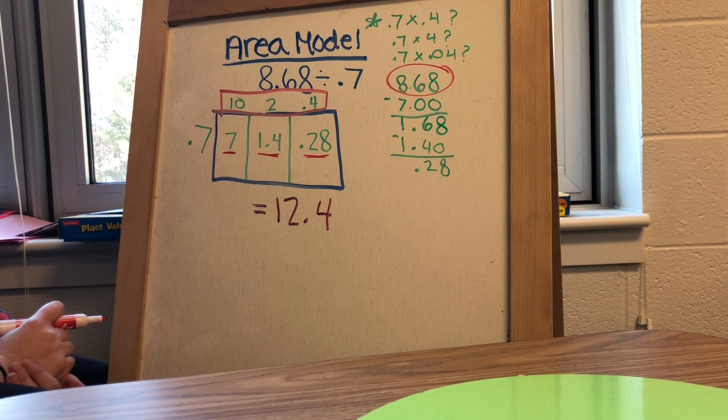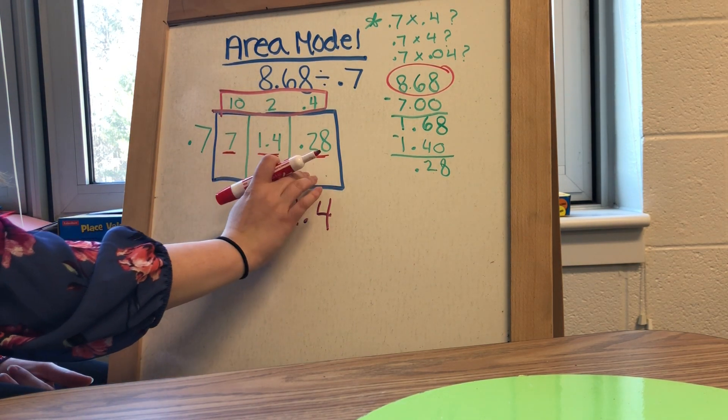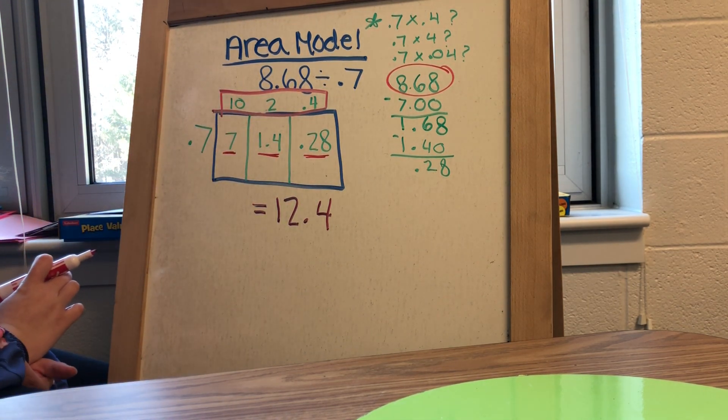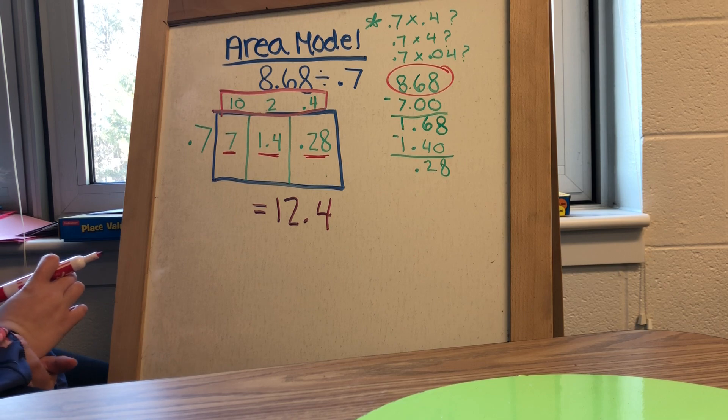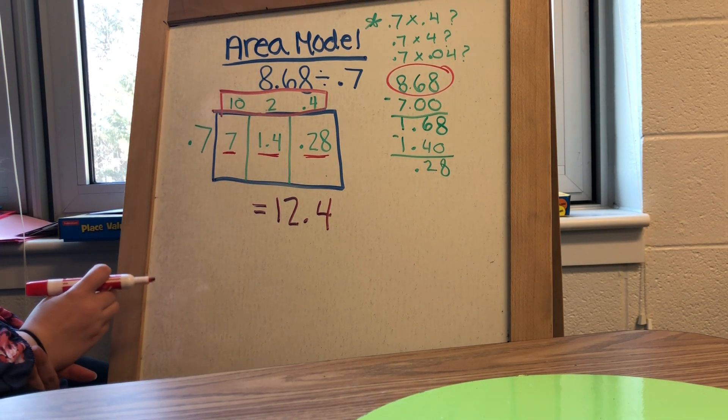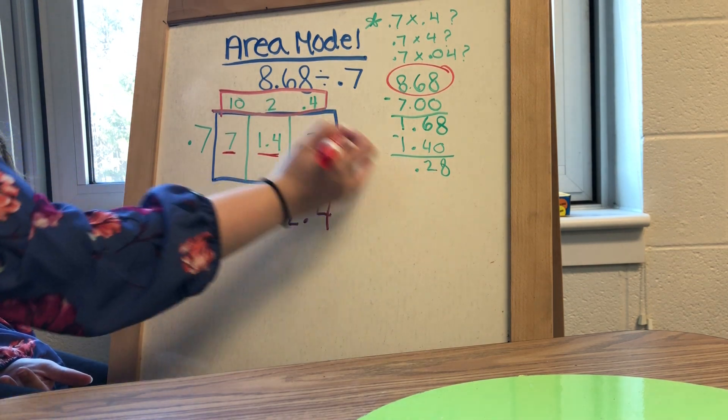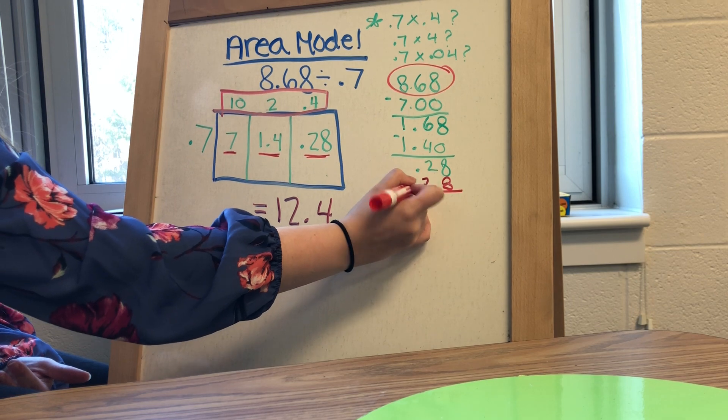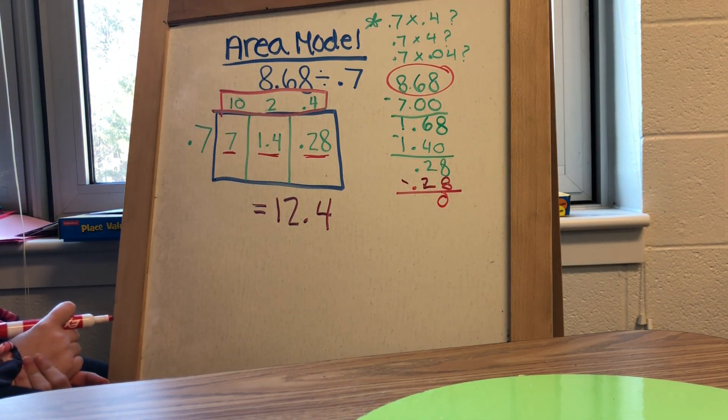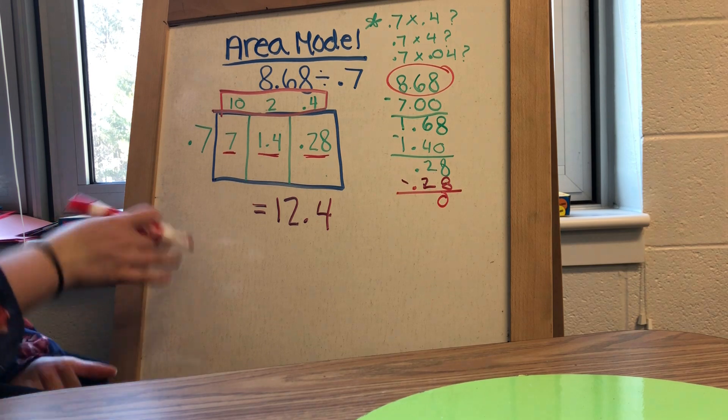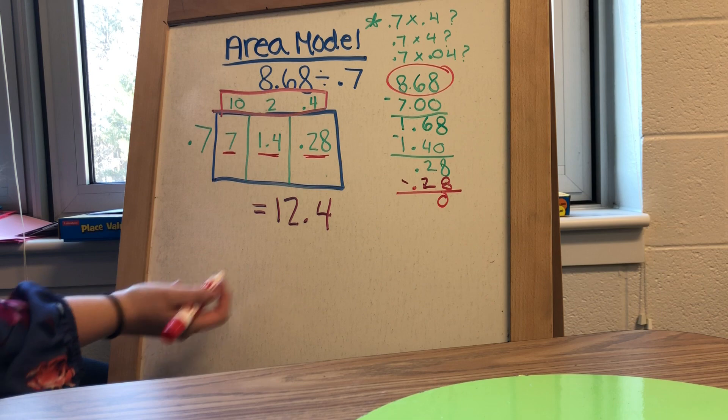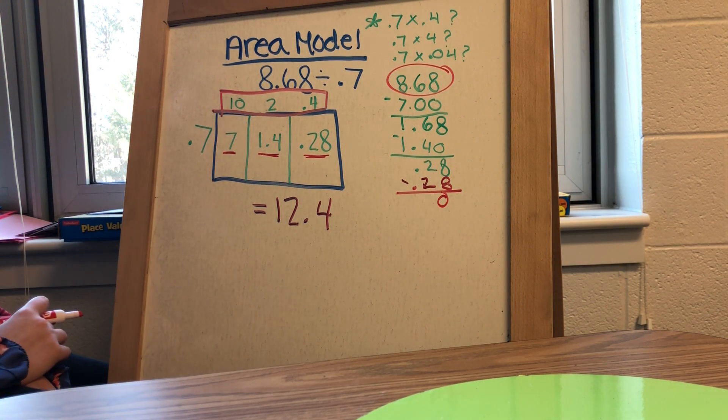Now, just because I did it this way doesn't mean that every area model is going to look like this. You can have as many boxes inside or as many sections inside this box as you would like. You did not have to start with 10. You could have started with any number that got you close. You could have started with 12, you could have started with 5. Again, if they didn't recognize that 4 tenths times 7 tenths is 28 hundredths, they could have done 1 tenth and then subtracted out and then gone from there. So every area model looks different, but this is just the one that I did because it made the most sense to me.